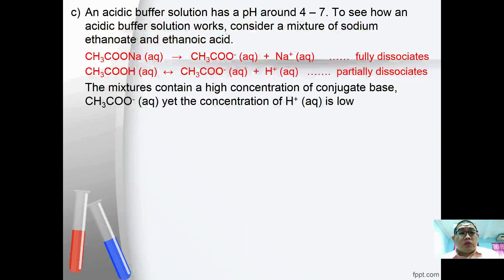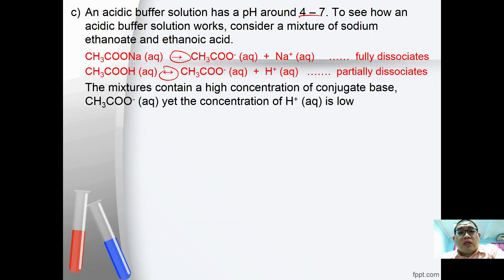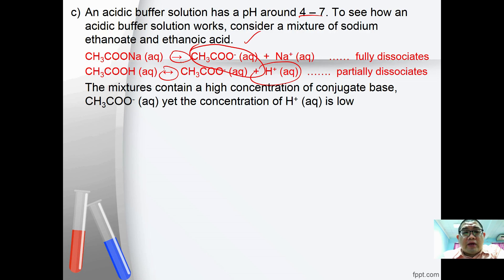An acidic buffer solution has a pH somewhere between 4 and 7. Consider a mixture of sodium ethanoate and ethanoic acid. Sodium ethanoate fully dissociates in water, whereas ethanoic acid only partially dissociates. The mixture contains a high concentration of conjugate base CH3COO- but a low concentration of H+. Essentially the system contains conjugate base, acid, and CH3COOH.